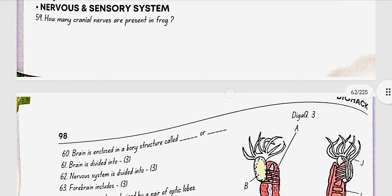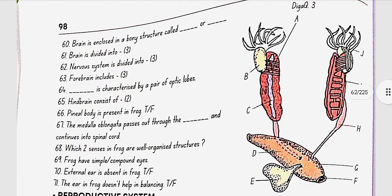Nervous and sensory system. How many cranial nerves are present in frog? So, 10 cranial nerves are present in a frog. Brain is enclosed in a bony structure called brain box or cranium. Brain is divided into forebrain, midbrain and hindbrain. Nervous system is divided into central, peripheral and autonomic. Forebrain includes olfactory lobes, paired cerebral hemisphere and unpaired diencephalon.